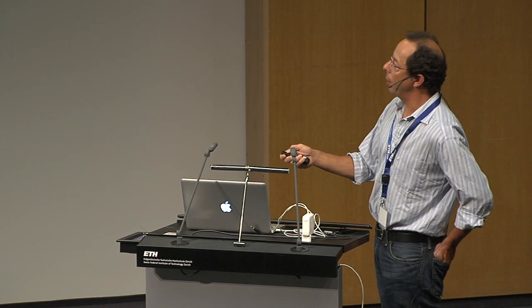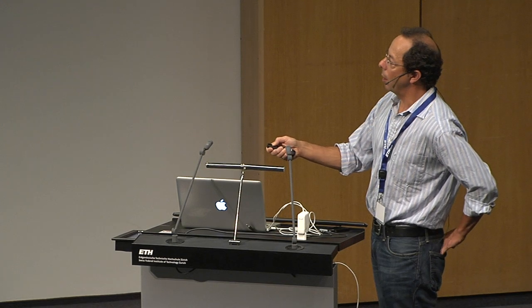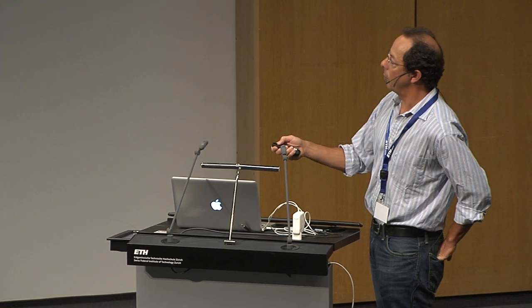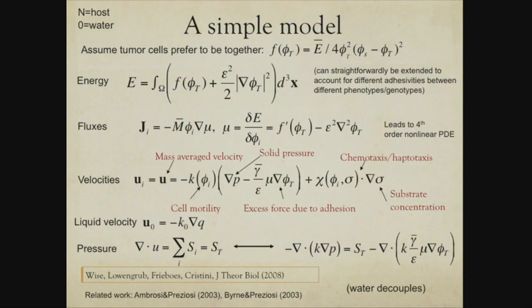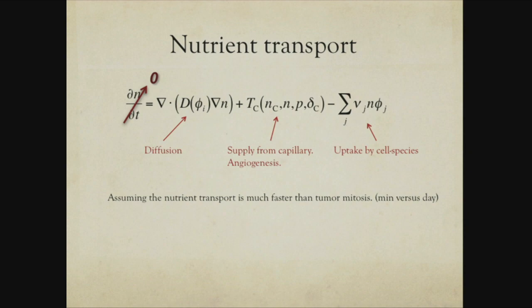One can simplify further by assuming that tumor cells prefer to be together, introducing a classic double-well potential energy depending only on the total tumor volume fraction. The flux then becomes proportional to the gradient of the chemical potential — the variational derivative. The pressure is determined by assuming all cells move together if tightly packed, and summing the mass equations gives a condition on the divergence of the velocity, yielding a Poisson equation for pressure. Cells also need nutrients to proliferate, modeled by a classic reaction-diffusion system where nutrients diffuse much faster than cells proliferate, supplied by capillaries and uptaken by different cell species.